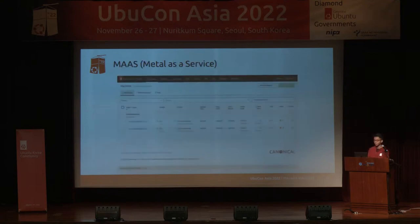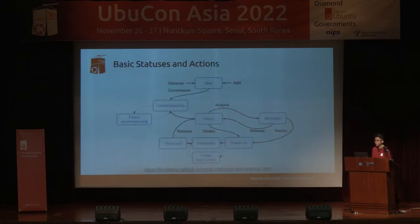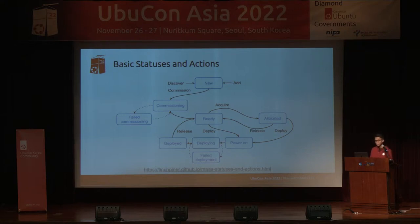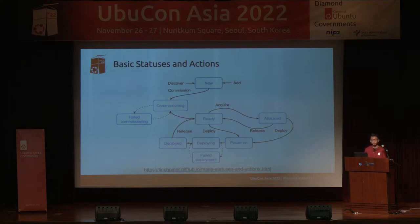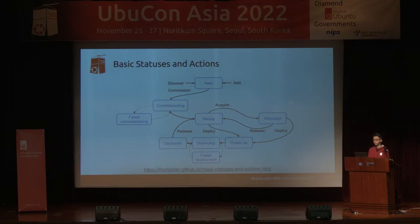This is what MAAS looks like — this is the dashboard. I'll show you more detail in the demo. MAAS has machine statuses. The first is 'new' — when you add a new machine or it's discovered automatically, it's labeled as new. If you want to see what the inventory looks like on your bare metal server — CPU, RAM, disk, network, even GPU — you can do commissioning. Commissioning basically installs a temporary operating system on your bare metal to collect the inventory and send it back to MAAS. After that, the bare metal will be 'ready' — you can allocate or acquire it and deploy.